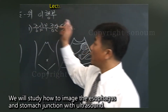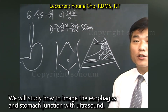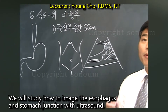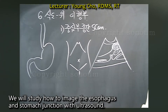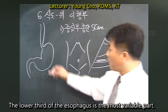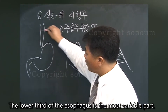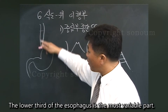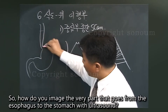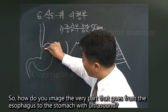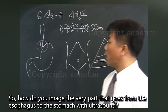We will study how to image the esophagus and stomach junction with ultrasound. The lower third of the esophagus is the most variable part. How do you image the very part that goes from the esophagus to the stomach with ultrasound?